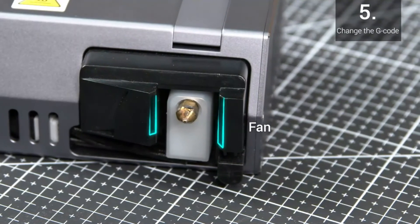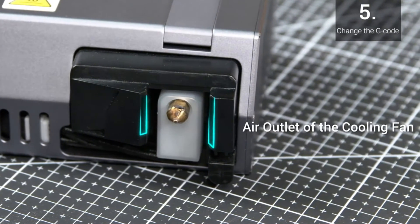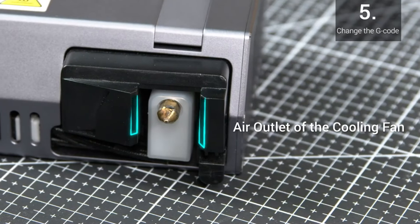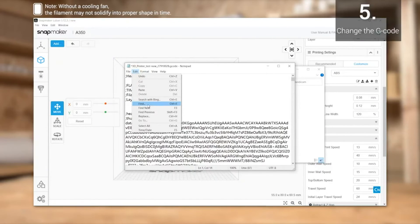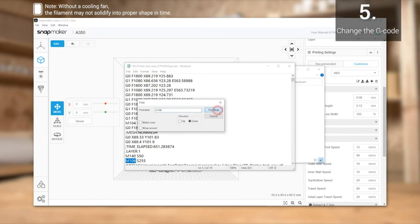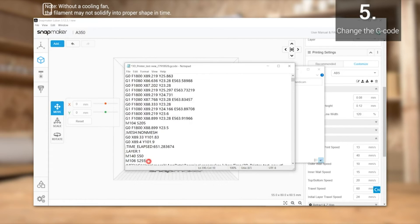The last one is sort of unconventional, changing the G-code to turn off the cooling fan if necessary. Export the G-code, open it with notepad, find and delete the line of M106 S255, then save the file and load it to the machine. By changing the code, we can minimize the airflow around the nozzle and let the filament cool more slowly.